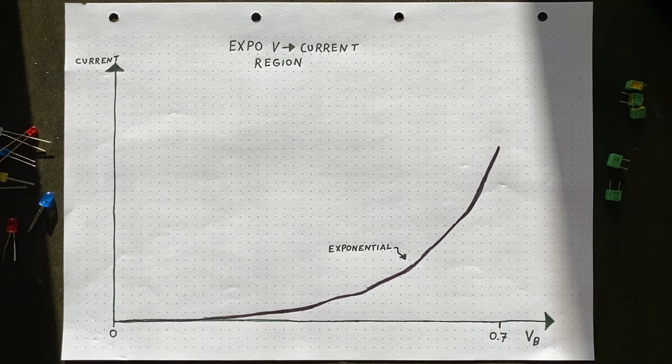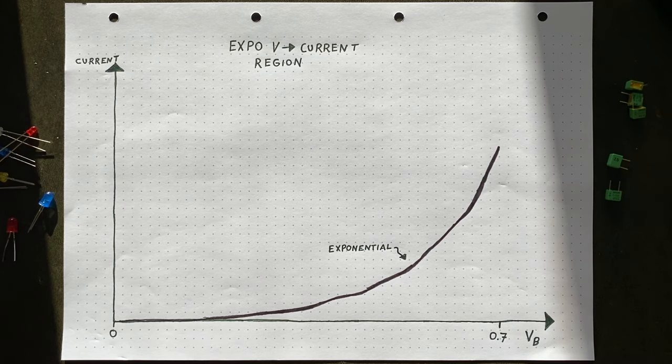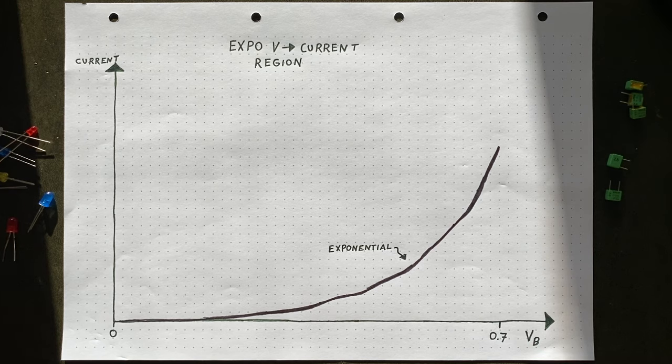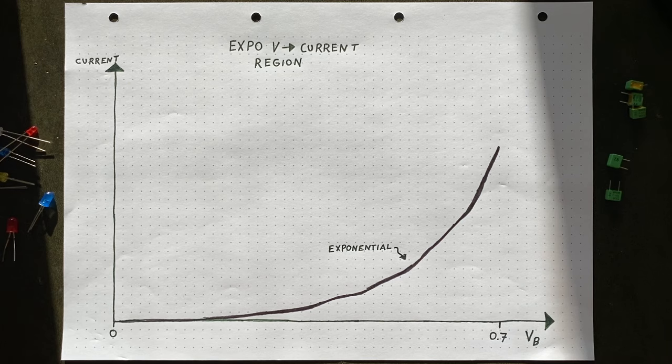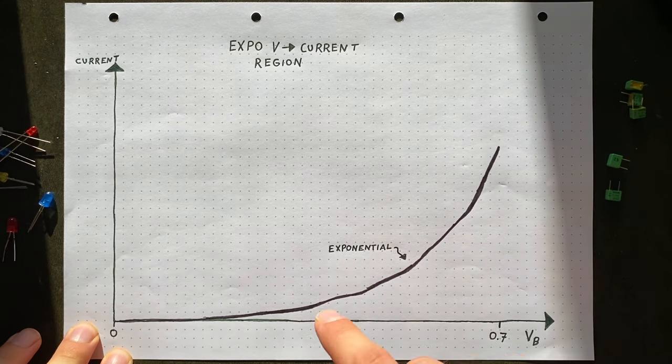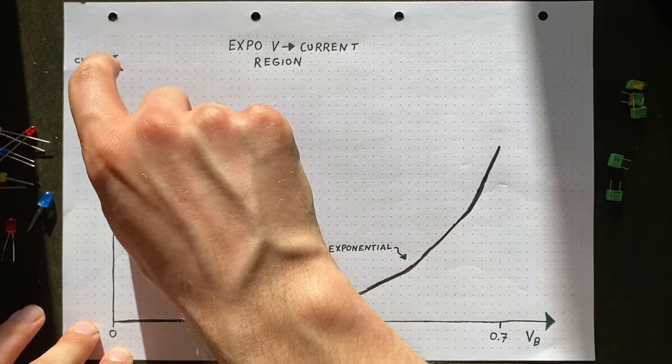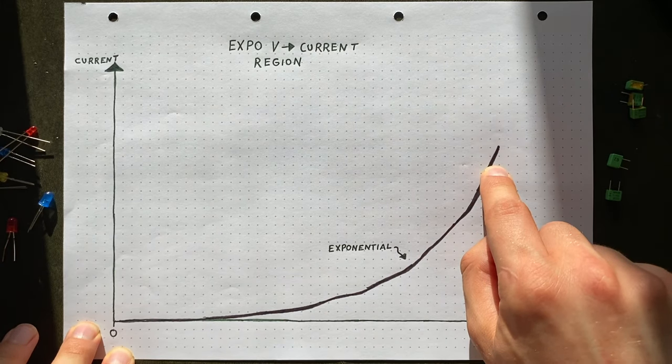Because first, the transistor is barely open, so the resistance between collector and emitter is really big. Second, instead of the base current controlling the transistor, now everything depends on the base voltage. And third, the relation between base voltage and the openness of the transistor is actually exponential. Quite convenient.